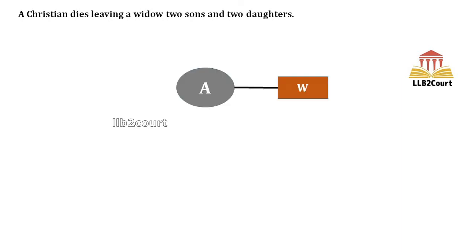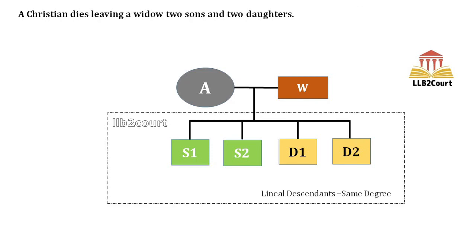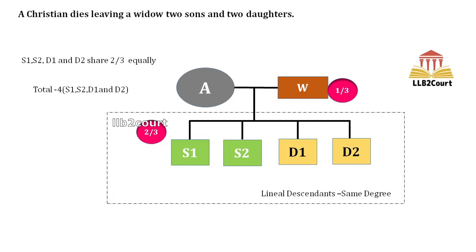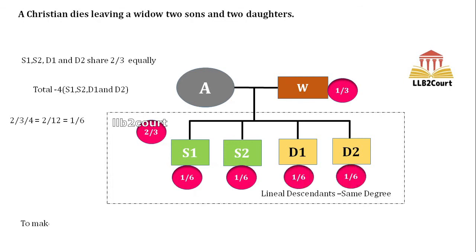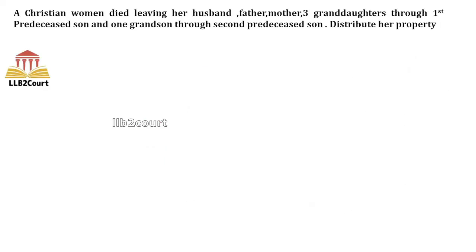Problem 4: A Christian dies leaving a widow, two sons, and two daughters. Widow W, sons S1 and S2, and daughters D1 and D2 are present. Since lineal descendants are present, the widow's share is 1/3. The remaining 2/3 is shared equally among the four lineal descendants S1, S2, D1, and D2. So 2/3 ÷ 4 = 2/12 = 1/6 each. To unify denominators: widow gets 2/6, and S1, S2, D1, D2 each get 1/6.